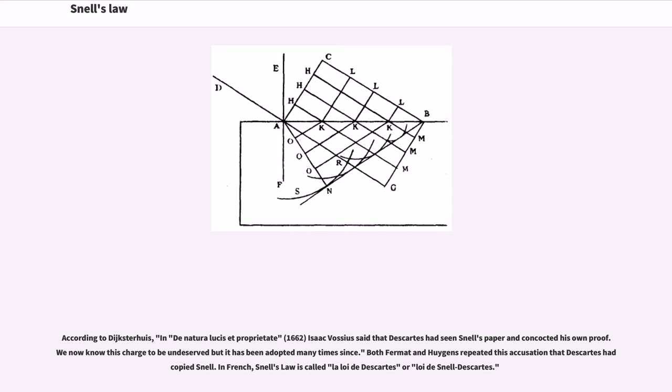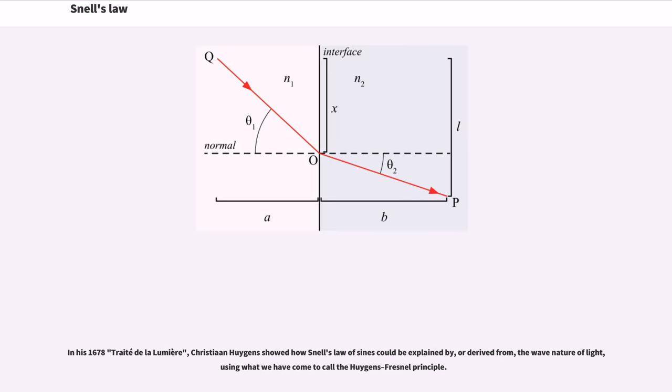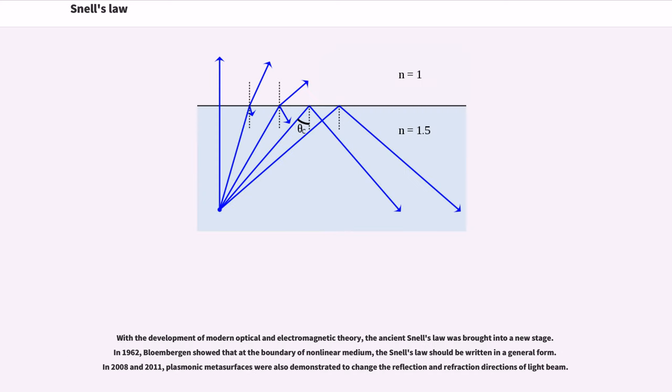In French, Snell's law is called La Loi de Descartes or Loi de Snell-Descartes. In his 1678 Traité de la Lumière, Christiaan Huygens showed how Snell's law of sines could be explained by, or derived from, the wave nature of light, using what we have come to call the Huygens-Fresnel principle.